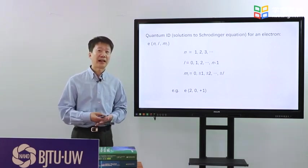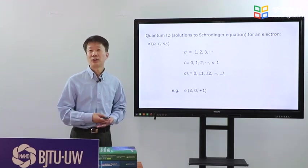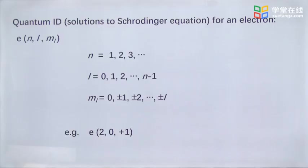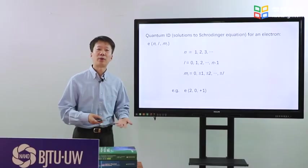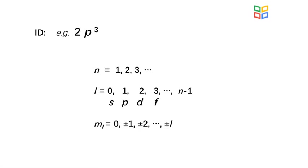For example, an electron with N equals 2, L equals 0, and ML equals plus 1. But in chemistry, we express the idea of electrons in another way. Here is it.